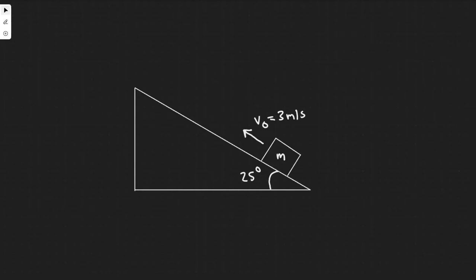In this problem, we're told a crate is given an initial speed of 3 meters per second up the 25-degree plane shown in this figure. Part A: how far up the plane will it go? Part B: how much time elapses before it returns to its starting point? Assume μ_k = 0.17.